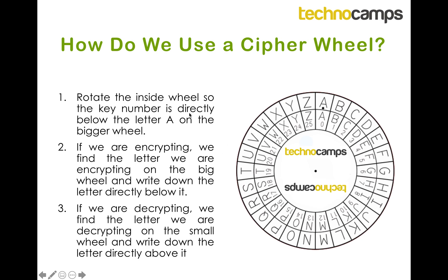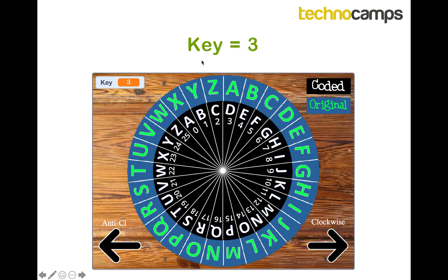Okay, so let's do a couple of examples. For a key of three, I've rotated the inside ring so that the number three is directly below the letter A. If I was doing encryption and wanted to encrypt the letter M, I'd find M on the outside ring and write down the letter directly below it, which is P. If I was decrypting — going from cipher text back into plain text — I'd look for a letter on the inside ring and write down the letter above it. So if I had the letter Y in my cipher text, I'd look for the letter directly above it, which is V.